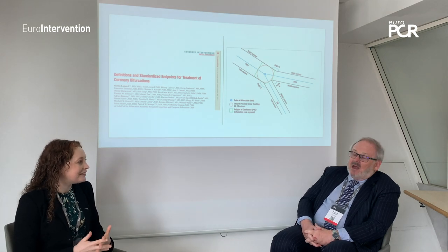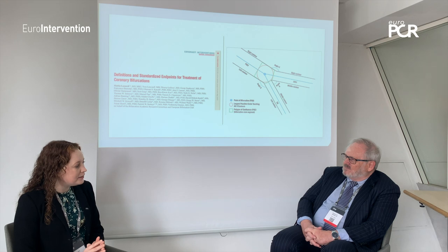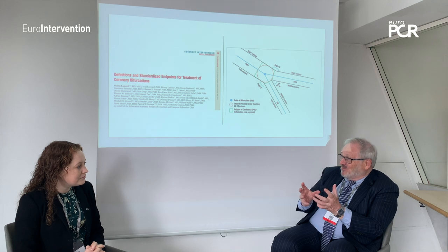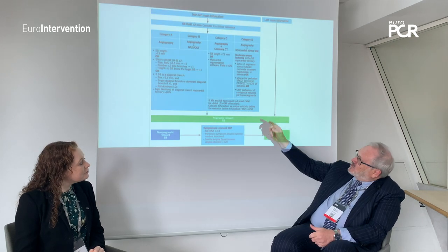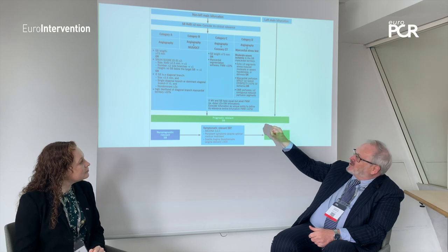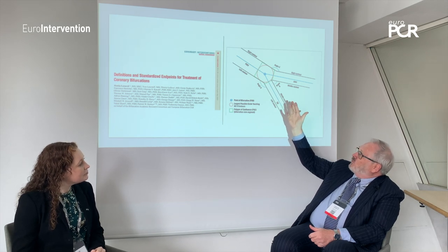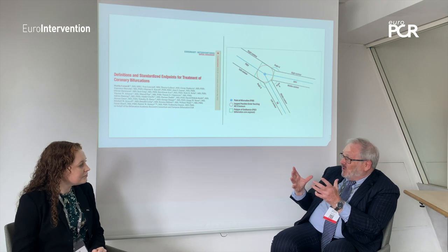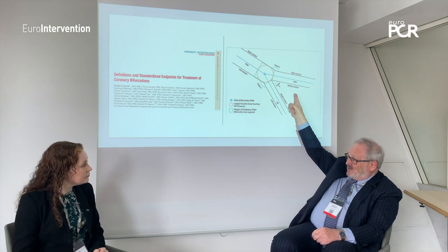So we're all speaking the same language when we have clear, standard definitions. The first key topic is to exactly define the anatomy — so that when you call something a side branch, I also call it a side branch. That's what we call a bifurcation: there are a few terms — PMV, DMV, side branch, polygon of convergence (POC). If we use exactly the same terminology, this is the distal main vessel with respect to the proximal main vessel. It seems basic, but we still see confusion about that.